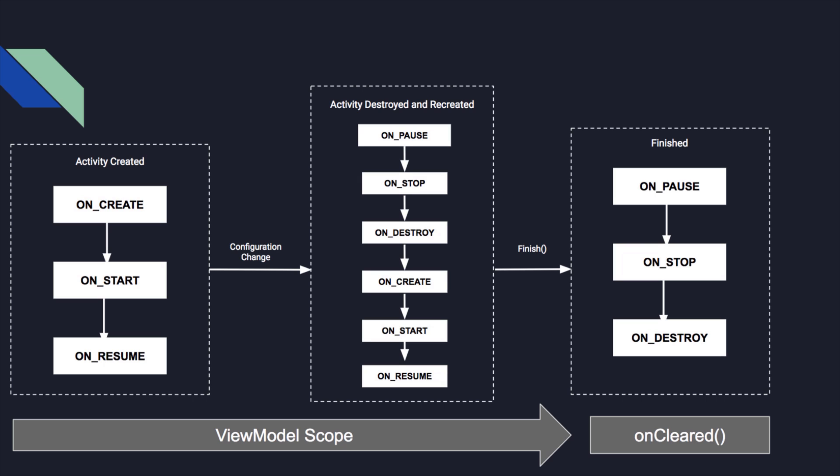Let me show you the ViewModel scope. When we rotate our device there are six different activity lifecycle callbacks which are triggered: onPause, onStop, onDestroy, onCreate, onStart, and onResume. Our ViewModel scope contains all those callbacks. When we connected our main activity with our ViewModel, the ViewModel class received all those activity callbacks from our main activity. That's how our ViewModel class is able to save our integer value in the background, and it does that all by itself automatically behind the scenes.